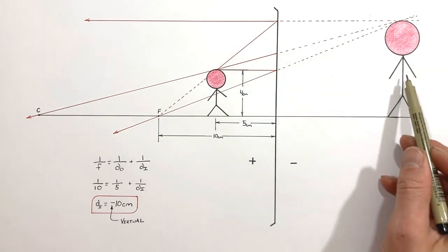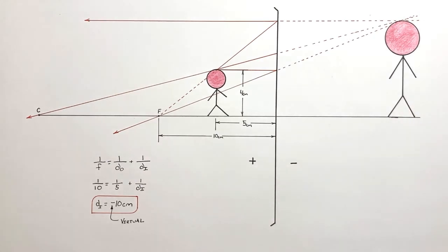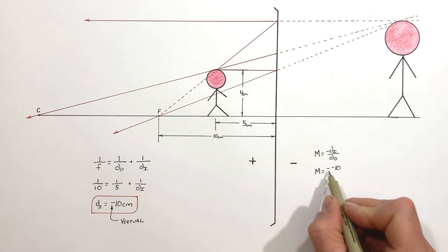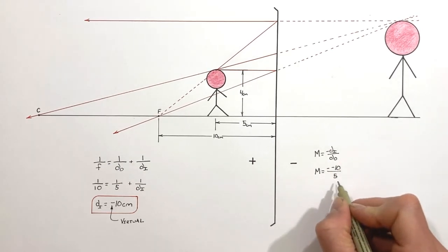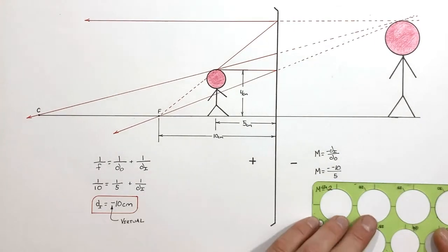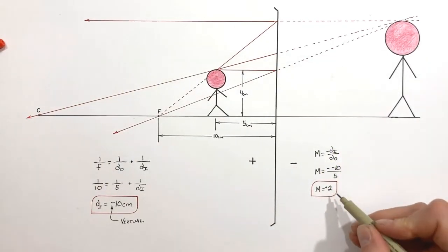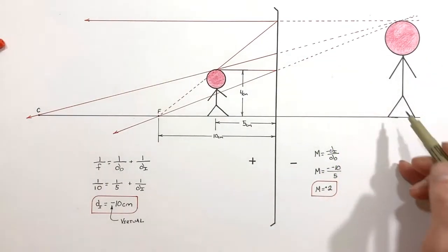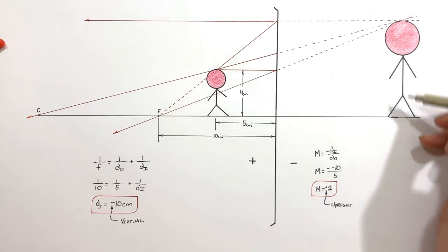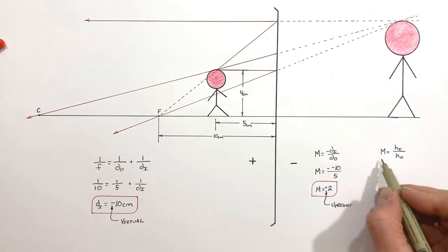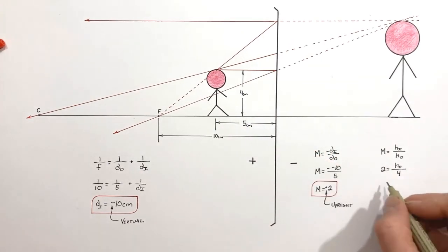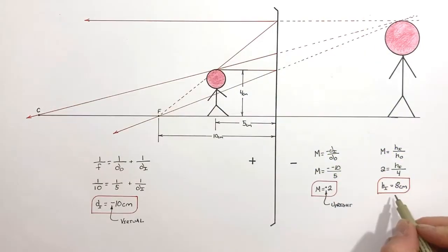Next let's confirm the magnification and expected height of this image. The magnification is the image distance of negative 10 divided by the object distance of 5, which gives us a magnification of 2. This magnification of 2 is positive, which means that our image is upright.